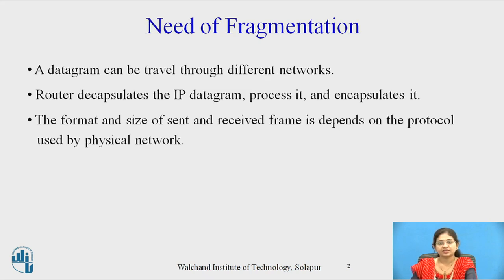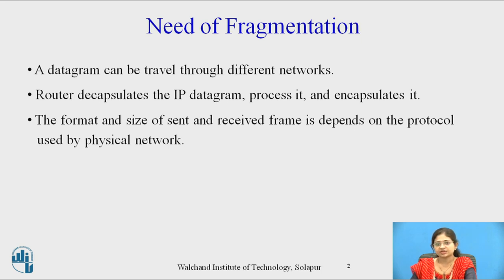Now let's see the need of fragmentation first. A datagram can travel through different networks. A router decapsulates the IP datagram, processes it, and encapsulates it into a new frame. The format and size of the sent and received frame depends on the protocol used by the physical network. When the frame is transmitted from one physical network to another, the size of the IP datagram changes. Some physical networks cannot accept large IP datagrams, hence there is a need for fragmentation.